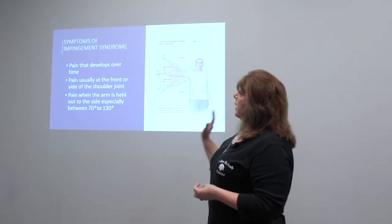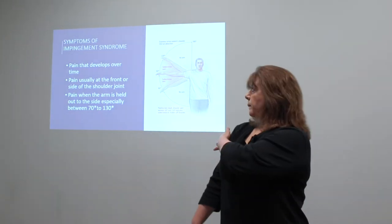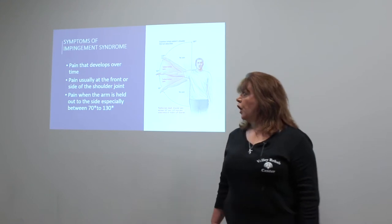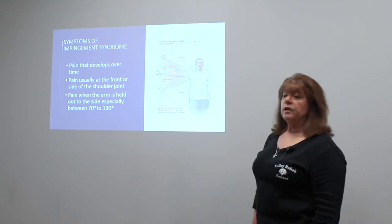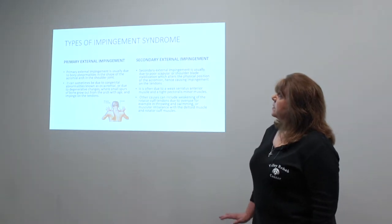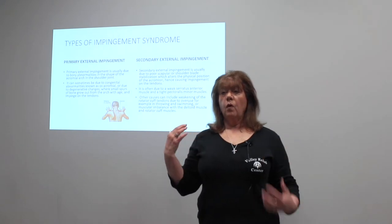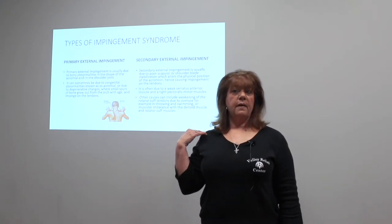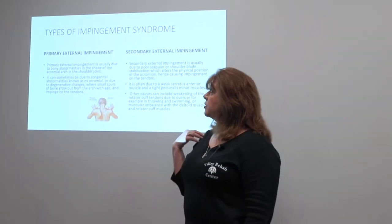With impingement syndrome, the pain develops over time. It's usually in the front or the side of the arm, and the pain occurs most often between 70 and 120 to 130 degrees — that's called a painful arc of motion. Impingement syndrome can be caused by bone spurs or an AC joint that is too tight or too mobile; that would be a primary external impingement, caused by something other than a muscular or instability issue.